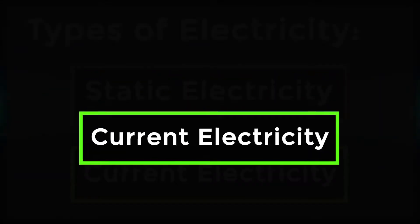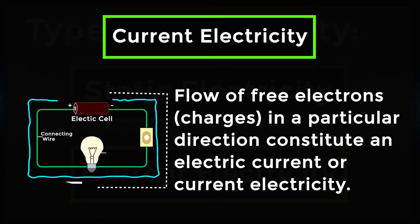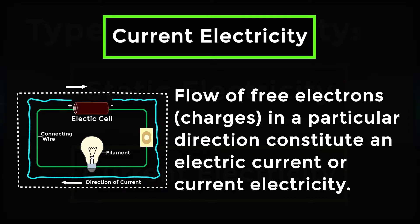Now let's look into current electricity. Flow of free electrons or charges in a particular direction constitutes an electric current or current electricity.